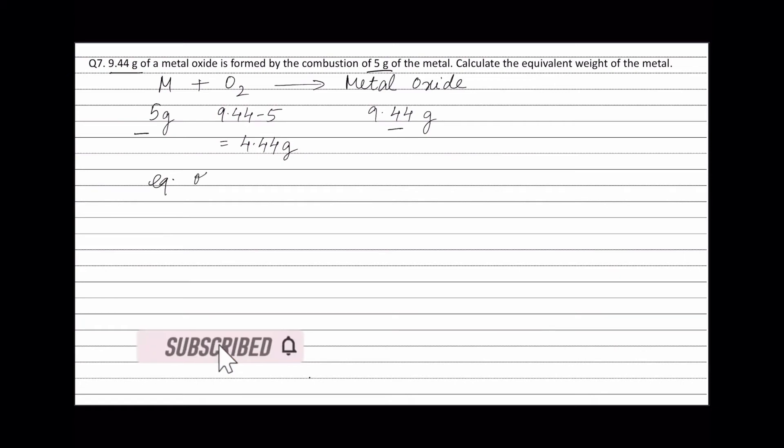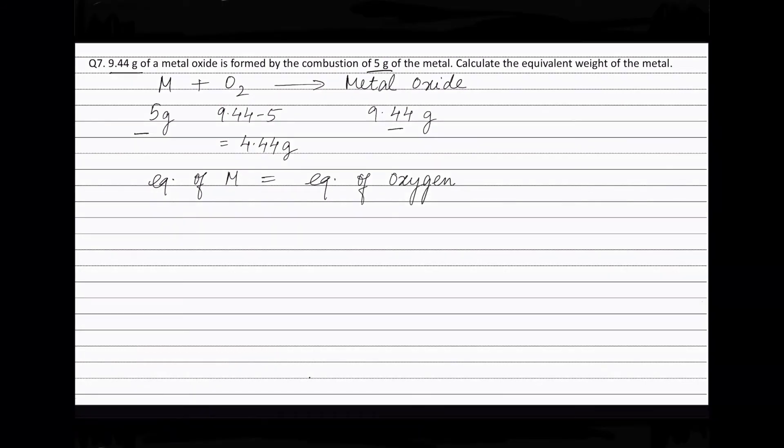Now, equivalence of metal is equal to equivalence of oxygen. Therefore, we can write: equivalence of metal equals weight of metal (5 grams) divided by equivalent weight of metal. Let it be E, and this is equal to equivalence of oxygen.